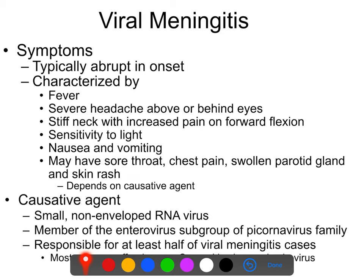Viral meningitis symptoms are similar to those of bacterial meningitis, though often less severe. It typically has abrupt onset characterized by fever — usually milder but not always — severe headache above or behind the eyes, light sensitivity, nausea and vomiting from pain or disorientation. It often starts as an upper respiratory infection, and can also involve sore throat, chest pain, swollen parotid glands, and occasionally a skin rash. The specific symptoms depend on what the causative agent is.